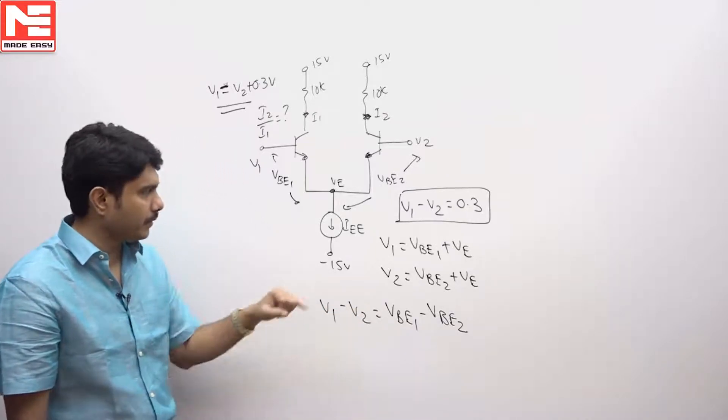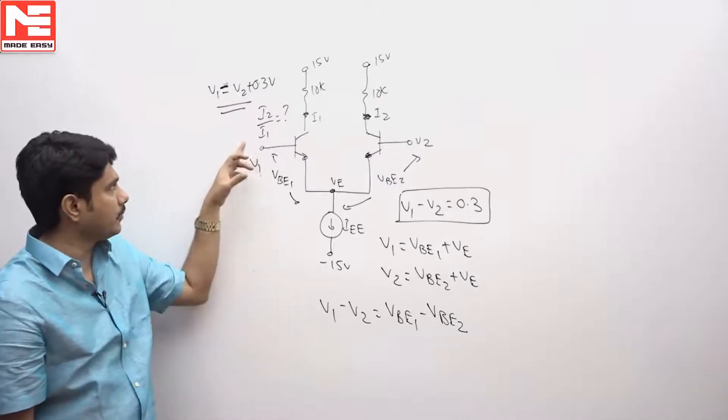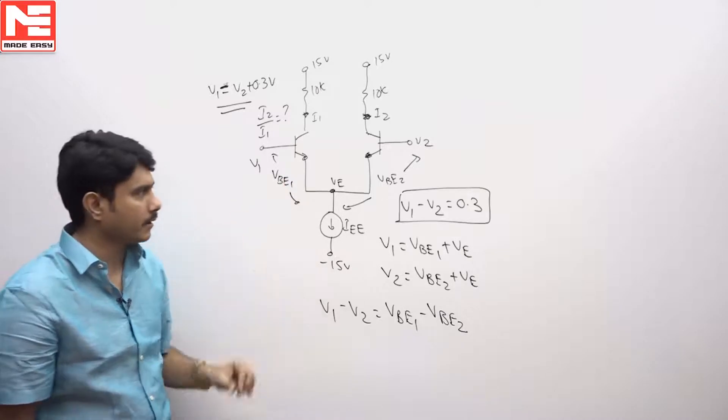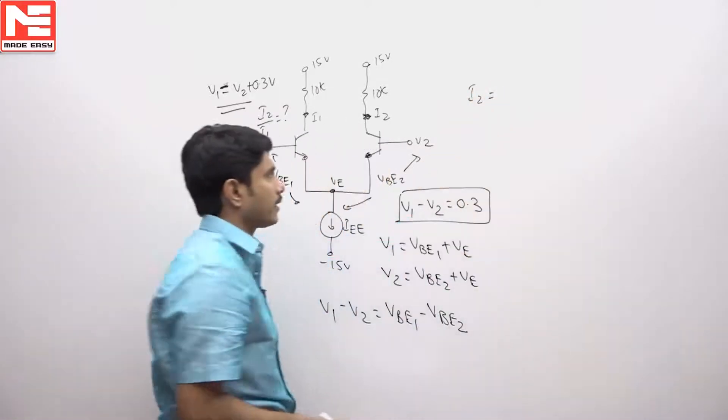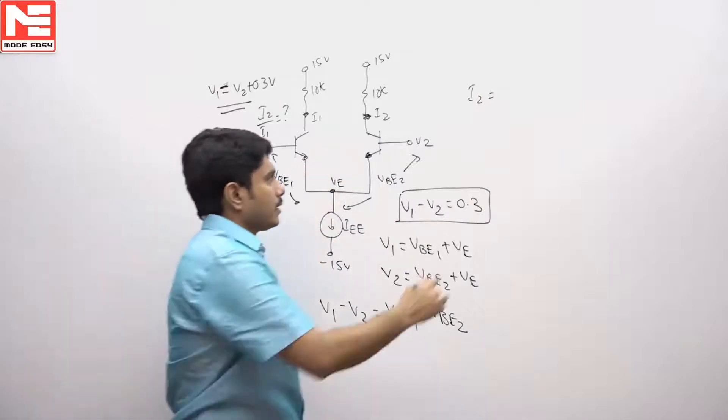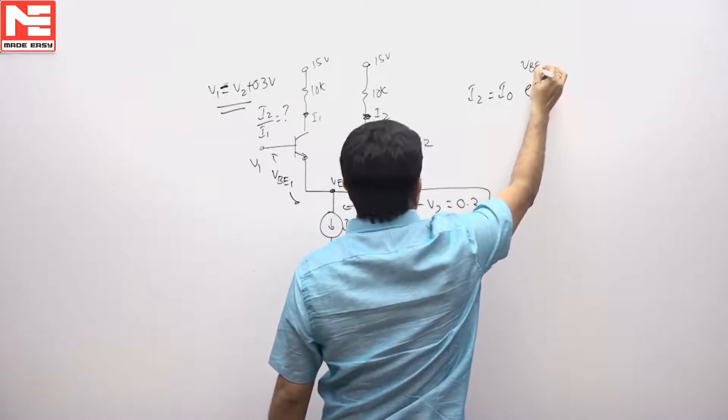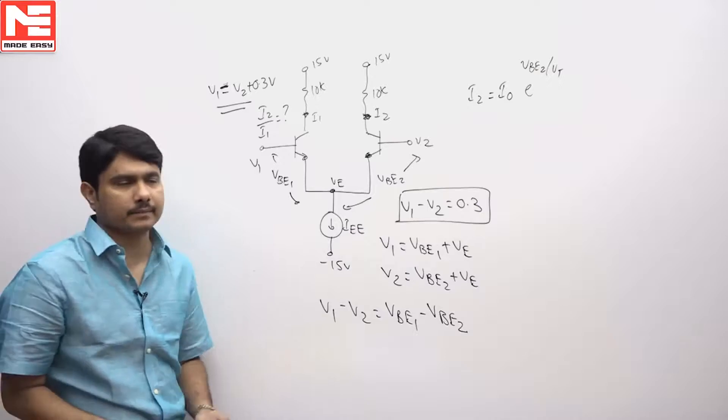Now VB1 and VB2 are nothing but diode voltage drops. Now what is I2 by I1? This is the diode current equation that can be represented as I2 equals I0 times E power VB2 divided by VT, your second diode current equation.